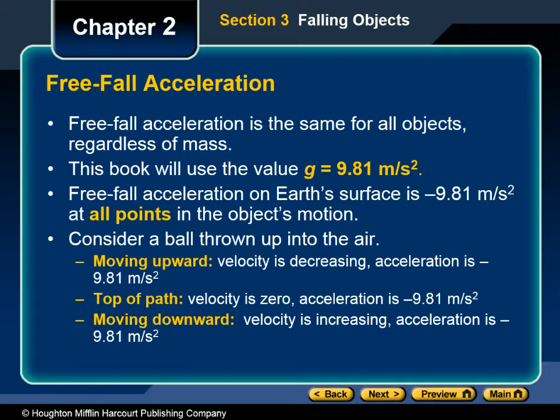It may seem a little confusing to think of something that is moving upward, like the ball in the example in the previous video, as having a downward acceleration. Thinking of this motion as motion with a positive velocity and a negative acceleration may help. The downward acceleration is the same when an object is moving up, when it is at rest at the top of its path, and when it is moving down. The only things changing are the position and the magnitude and direction of the velocity.